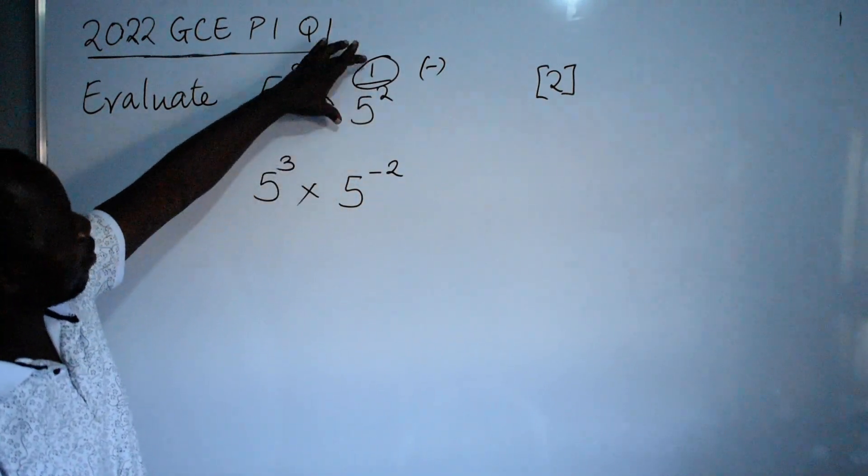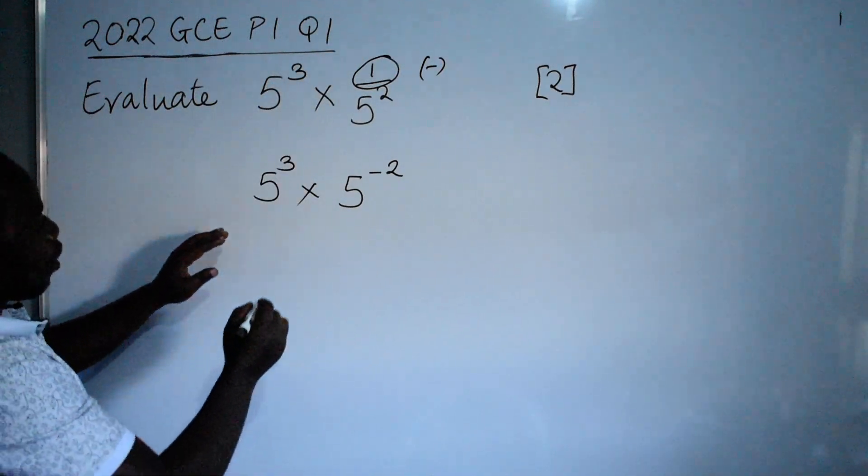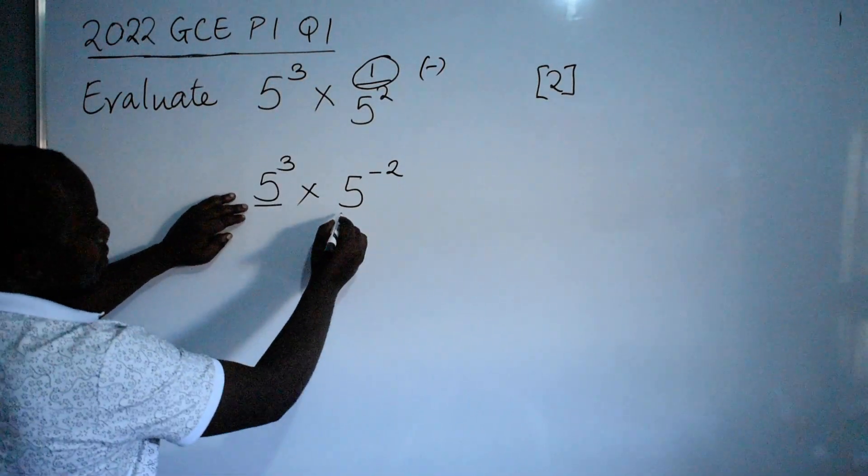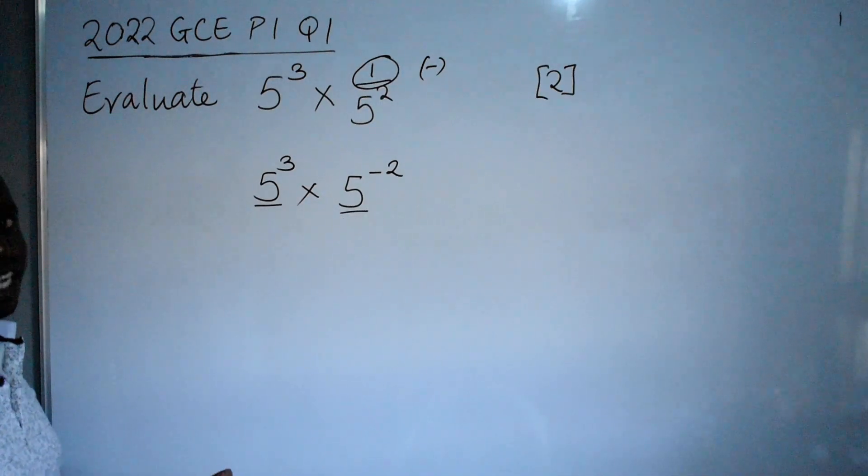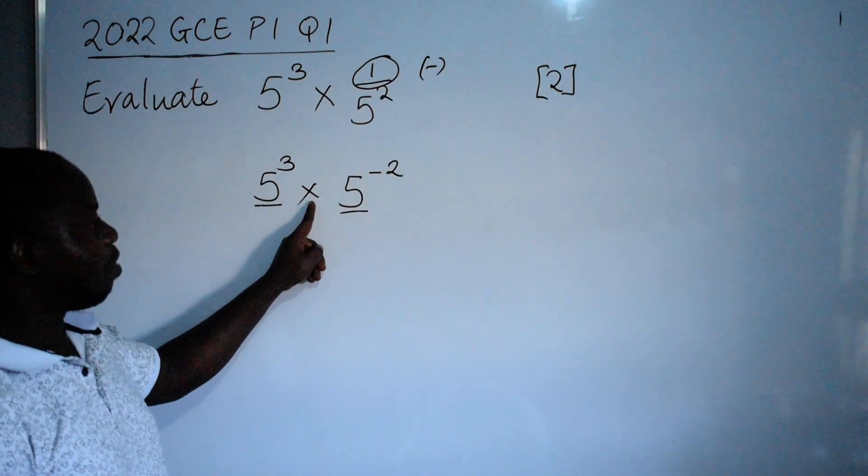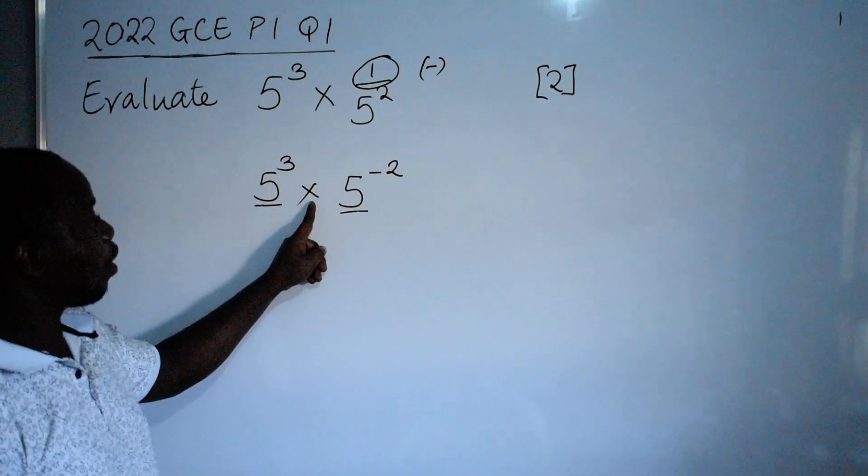Then we have the base 5 here, 5 here. What do the laws of indices say? Same base when you have a multiplication in between, what do you do with the powers? Add the powers.